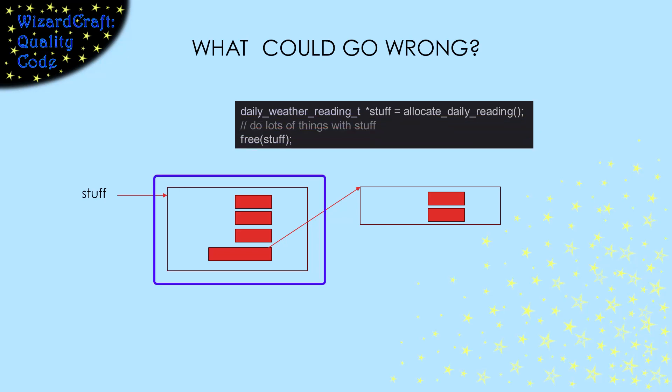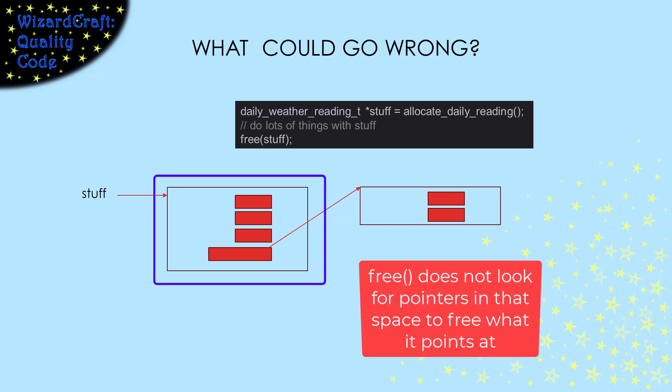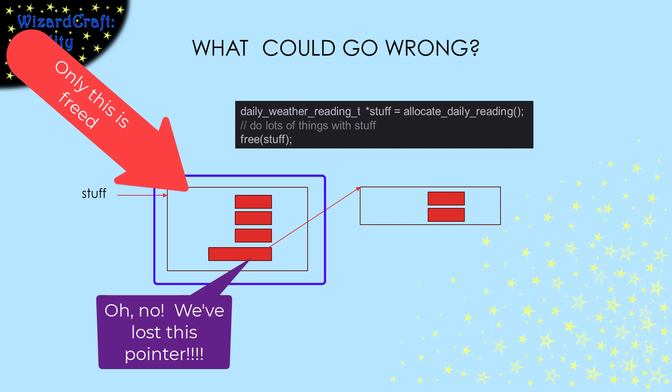When we free stuff, that block gets freed. But the block containing the two readings does not get freed. Even worse, we no longer have a pointer that points at it, so there is no way that we can find it and free it. Definite memory leak.